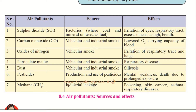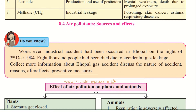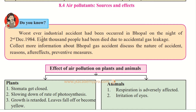The next pollutant is methane (CH4), which comes from industrial leakage — industries leak out methane gas during production. Its effects include skin poisoning, skin cancer, asthma, and respiratory diseases. These are the main air pollutants along with their sources and effects.